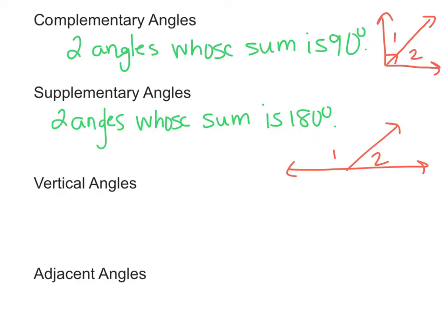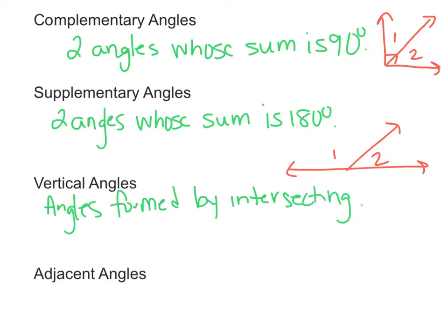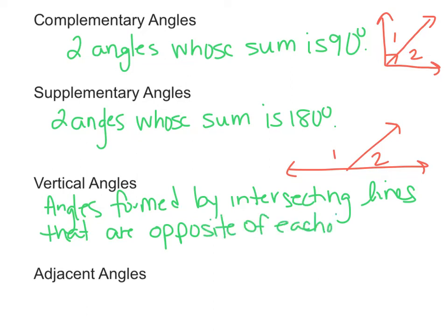Vertical angles are angles formed by intersecting lines that are opposite of each other. For example, if I drew a couple of intersecting lines here, vertical angles would be the angles opposite of each other. So this angle and this angle would be vertical, and this angle and this angle would also be vertical.